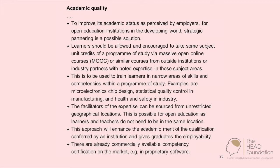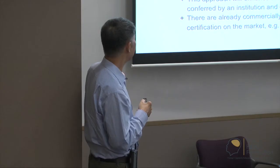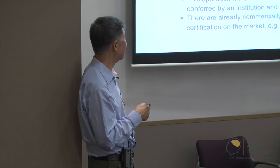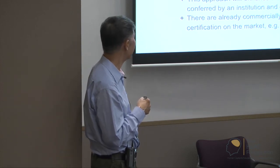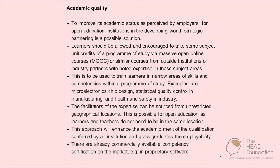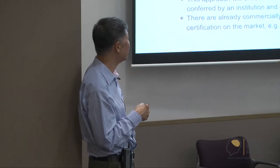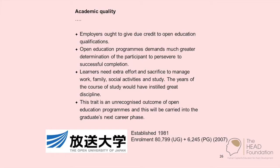It is still something that needs a lot of work to improve the academic status as perceived by employers. For open education institutions in the developing world, strategic partnering may help. Students should be allowed and encouraged to take some subject unit credits of a programme via MOOCs or similar courses from outside institutions or industry partners with noted expertise in those subject areas. Employers are to give due credit to open education qualifications.